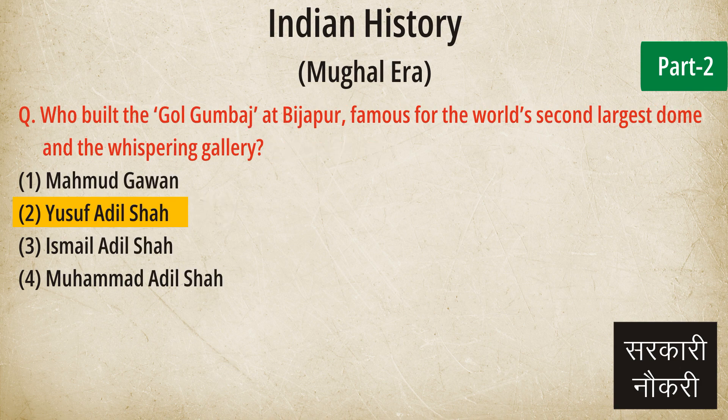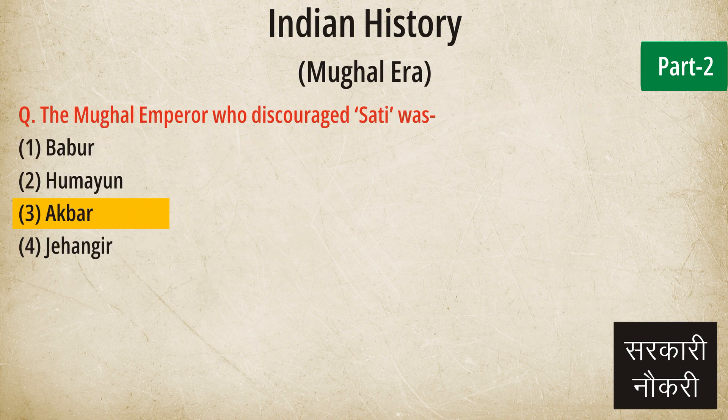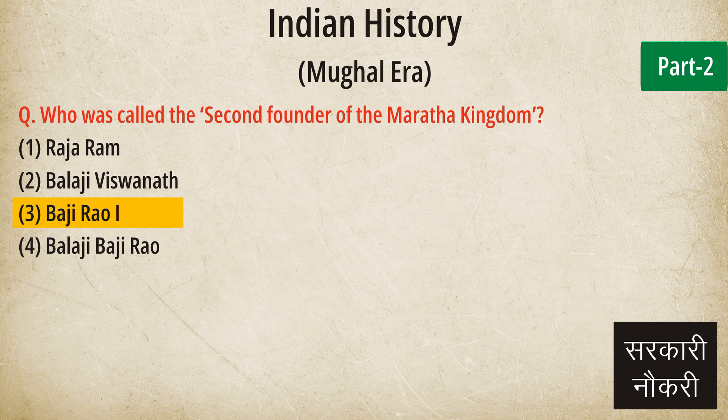Question: Who built the Gol Gumbaz at Bijapur, famous for the world's second largest dome and the whispering gallery? Answer: Yusuf Adil Shah. Question: The Mughal emperor who discouraged Sati was. Answer: Akbar. Question: Who was called the second founder of the Maratha kingdom? Answer: Baji Rao I.